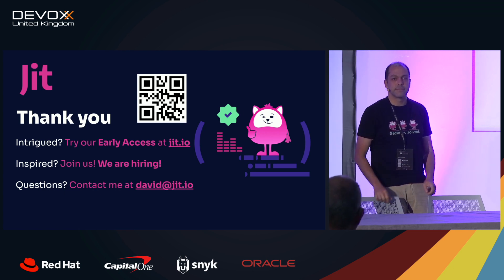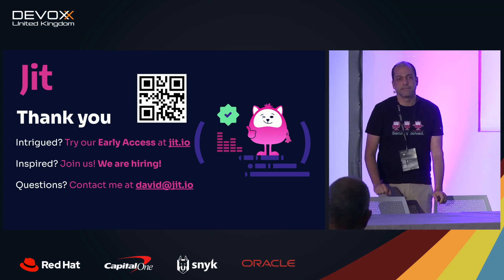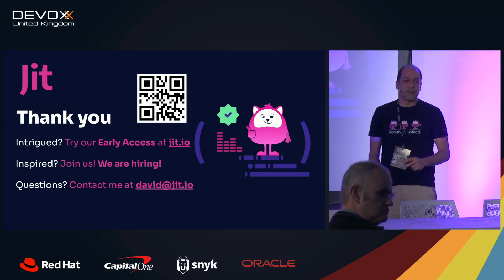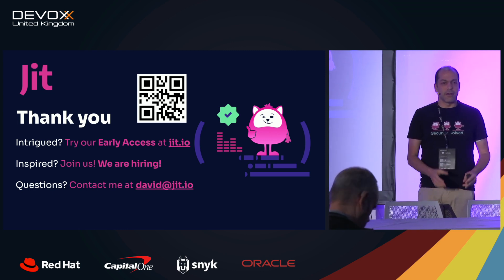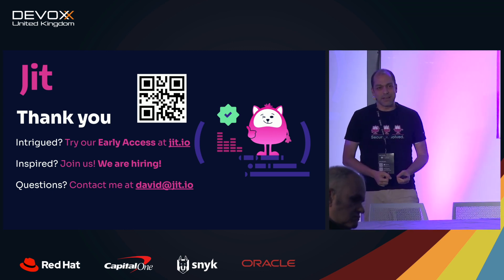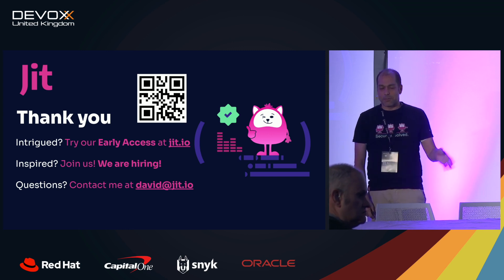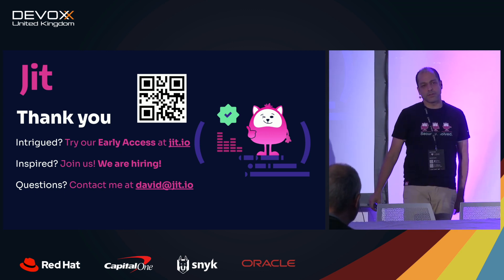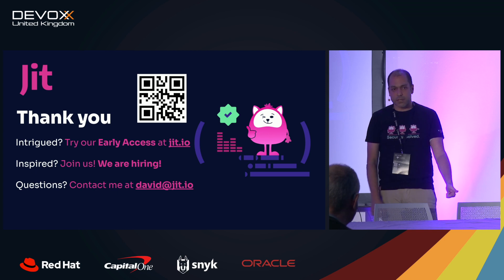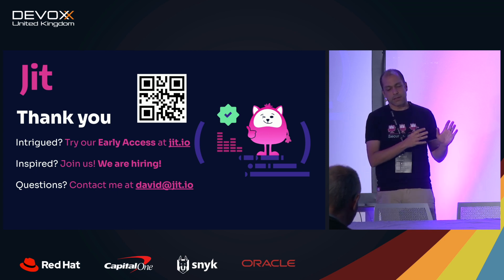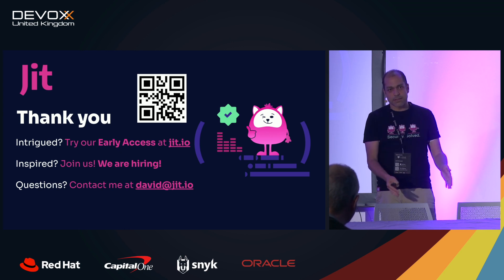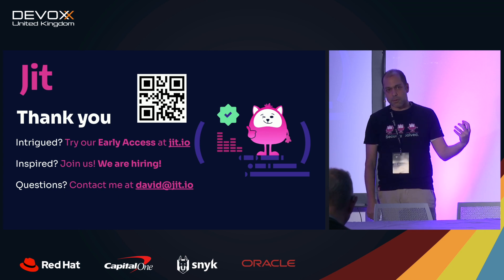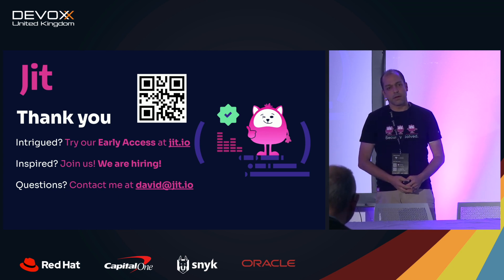Another question: this talk was more focused on AWS — what about Google Cloud and Azure? Yes, this was mainly focused on AWS, but there are similar things on Google and Azure with similar security controls. It's more of an approach than a list of AWS-specific things, so you can take each element and apply that approach to the other platforms.